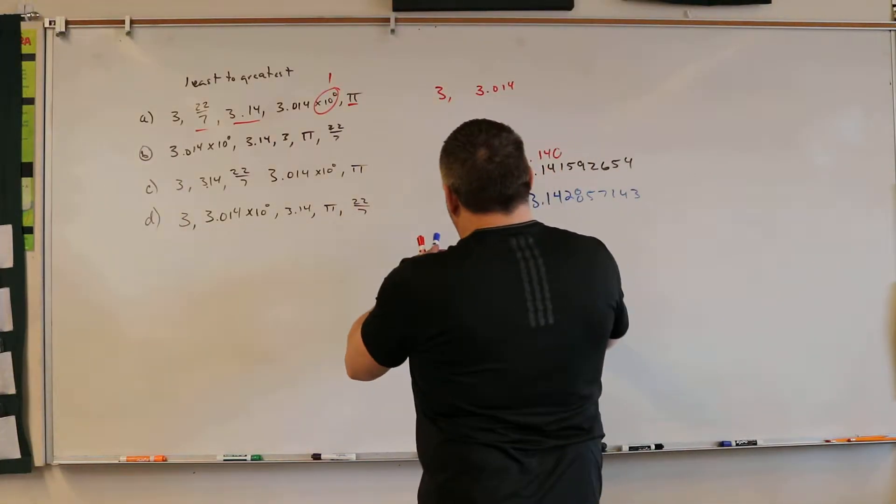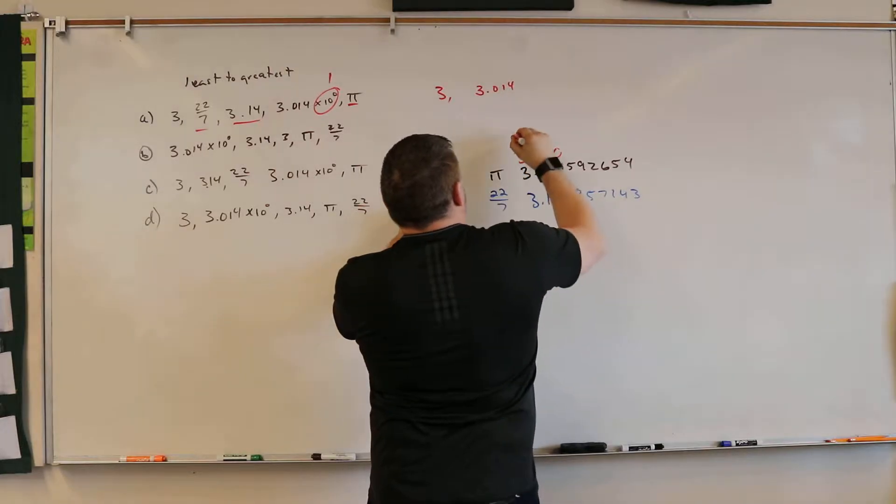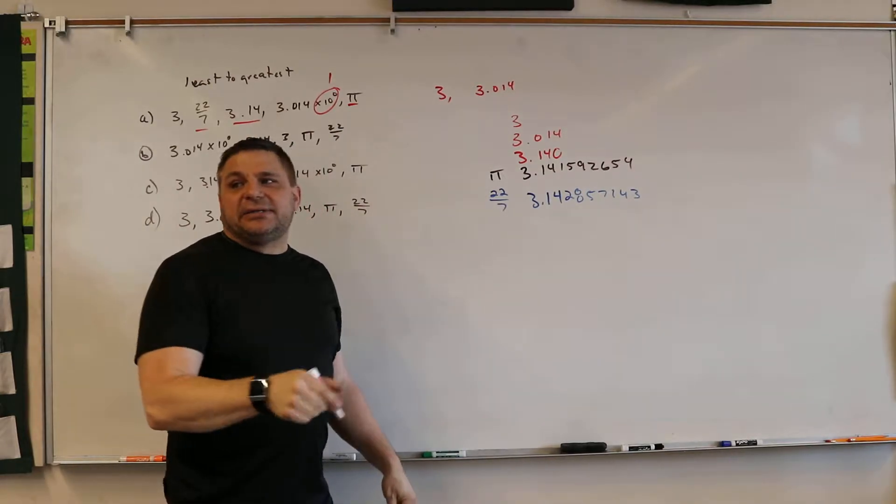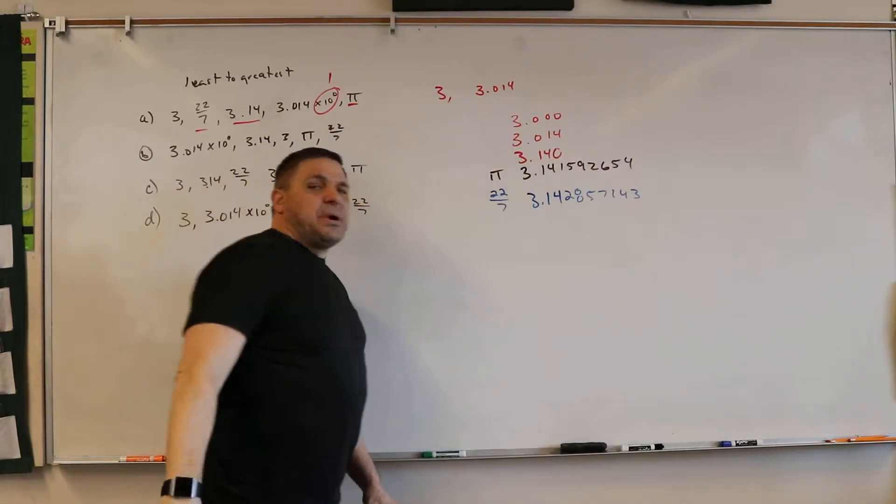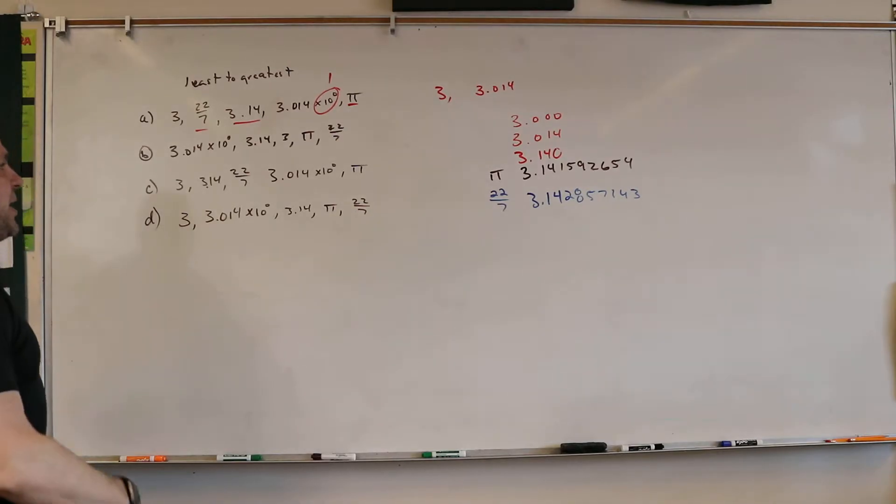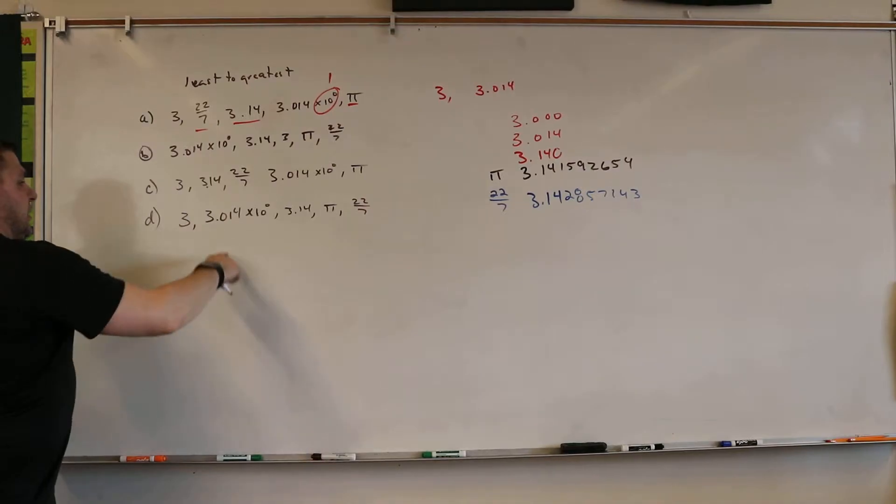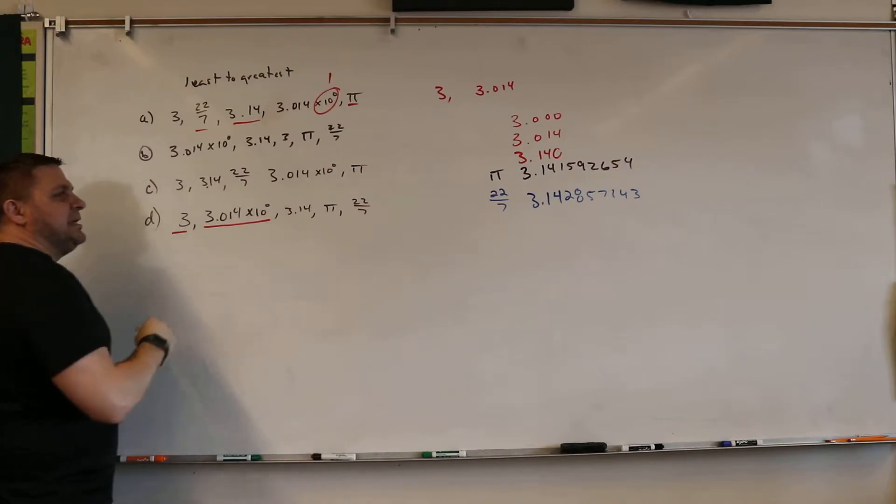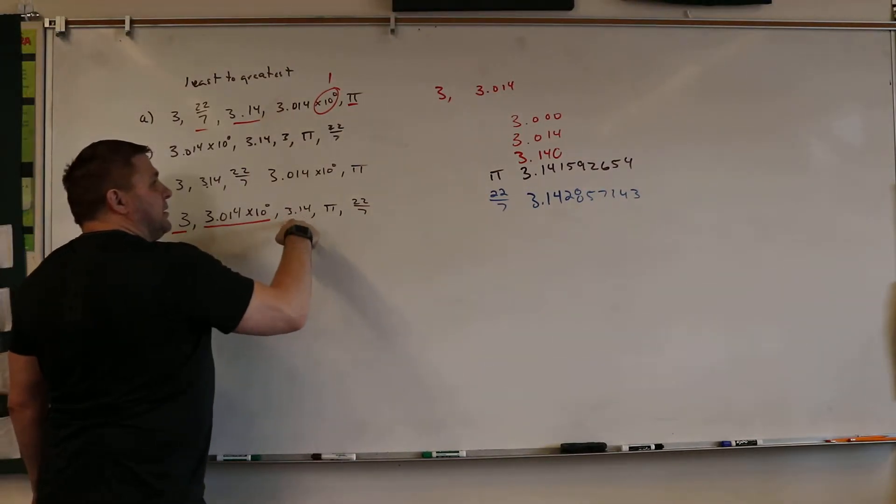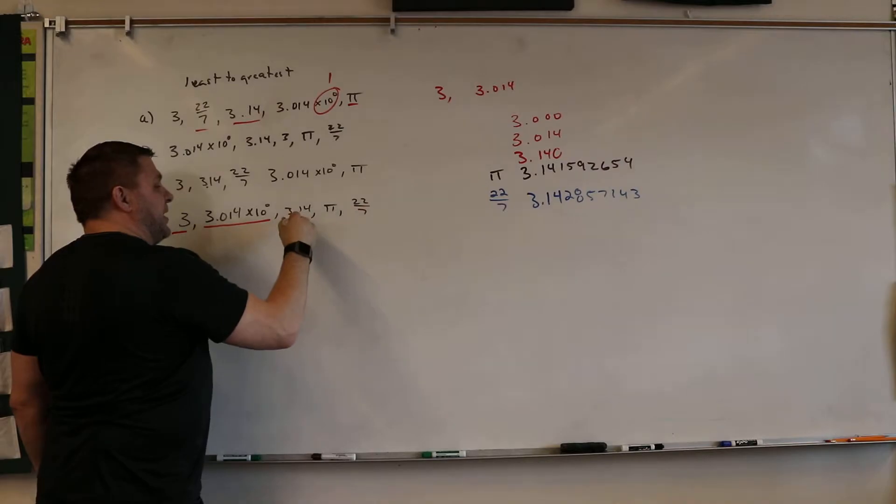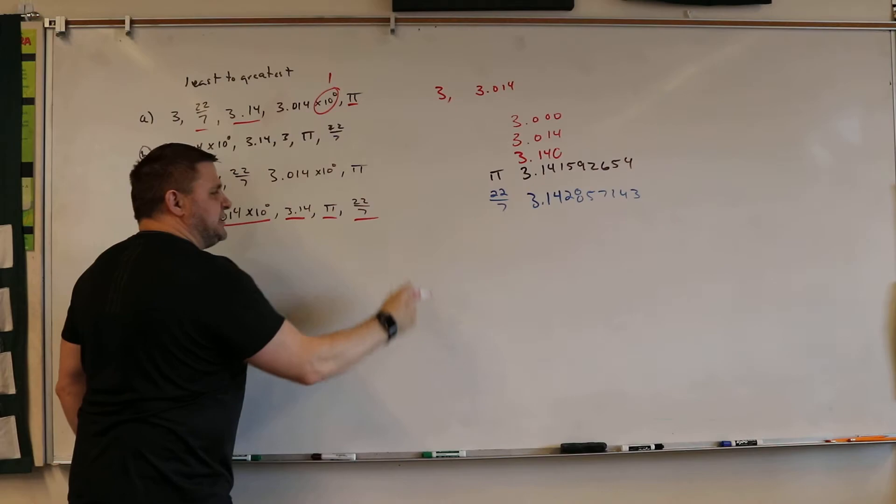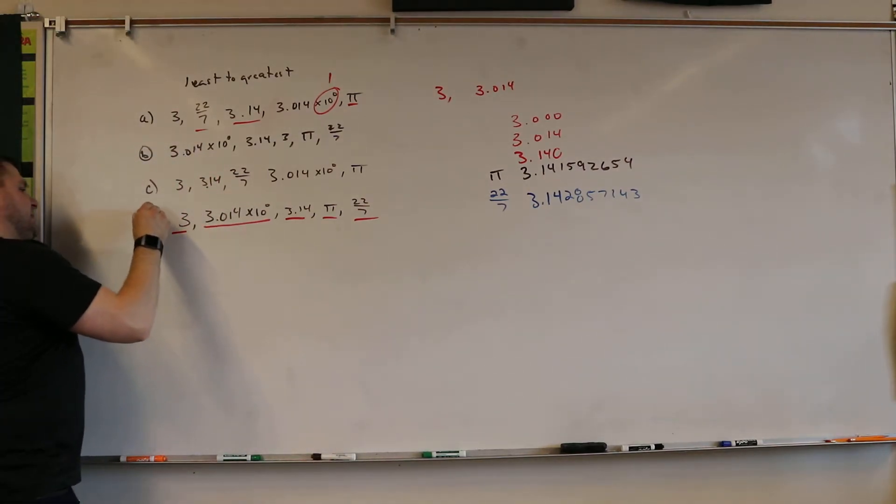So to put them in order, it would be 3.014, and then 3 is actually smaller than that because it's 3.000, right? So we want that. We want 3. Wait, what? 3.014 times 10 to the 0, right? It's 3.14. And then 22 over 7. So it is...